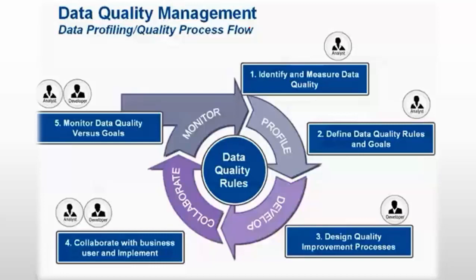The fourth step is collaboration with business users and implementation: we involve business people to review the output produced by the data quality developer tool. This is the collaboration step and can be achieved using both the Analyst and Developer Tools. The fifth step is monitoring, which is achieved using the monitor data quality application. The Analyst Tool helps monitor the data, with the developer also involved during this process. So the four major processes are: profile, develop, collaborate, and monitor, along with their sub-steps as shown on screen.